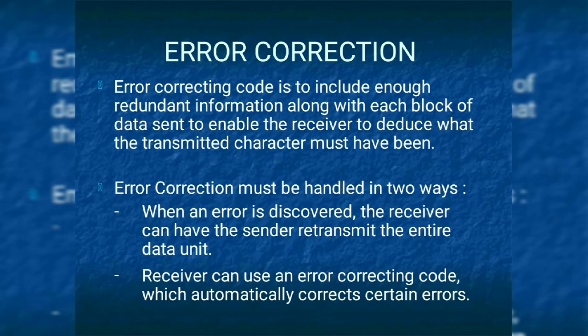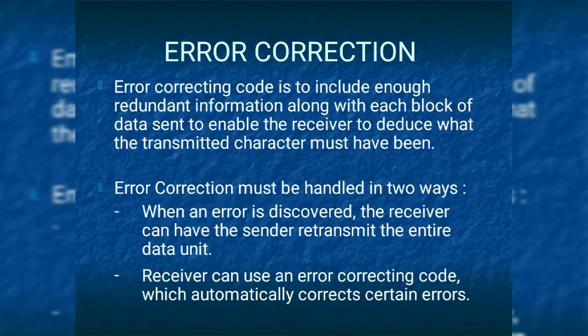Next concept: Error Correction. Error correcting code includes enough redundant information along with each block of data sent to enable the receiver to deduce what the transmitted data should be. Whatever data is to be transmitted — if it is not correct, you are going to correct the data. There are two error correction methods: first, when an error is discovered, the receiver tells the sender to retransmit the message using Automatic Repeat Request; second, the receiver can use error correcting codes which automatically correct certain errors.